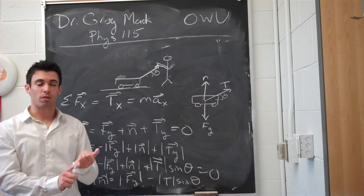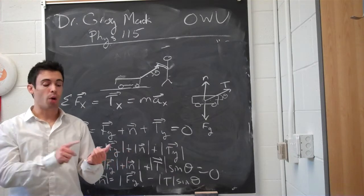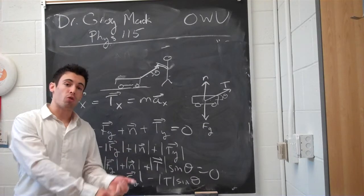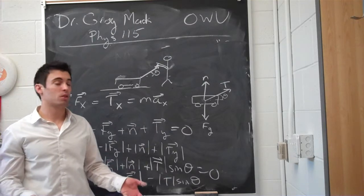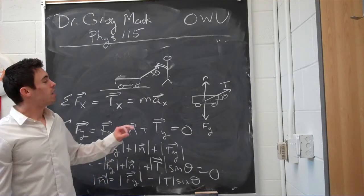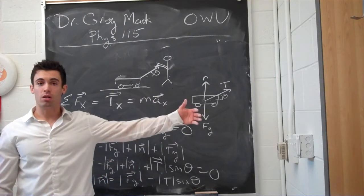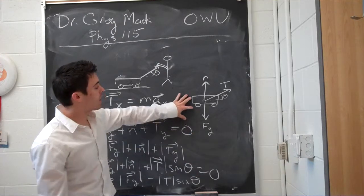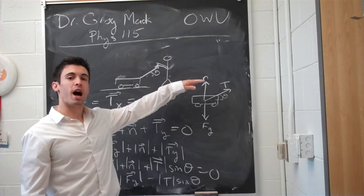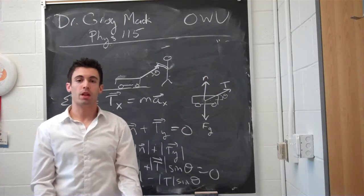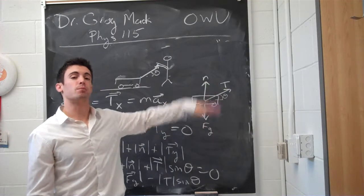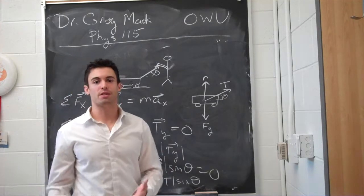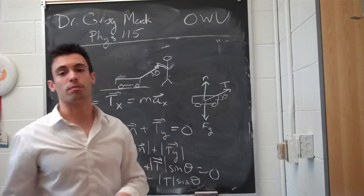An object at rest or in constant motion — meaning constant speed and direction — will stay that way unless the sum of the forces is not zero, meaning unless there's a non-zero net force. That non-zero force will cause an acceleration, a change in speed or direction. Any force will have a partner pair equal in magnitude and opposite in direction. For example, the floor exerts a force equal in size to the weight it feels from the wagon. We will be doing many examples of this in class and will talk more about it next time.